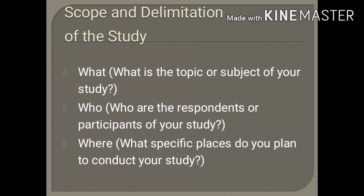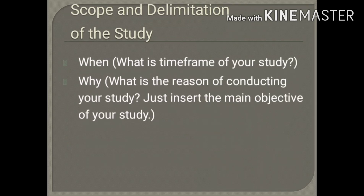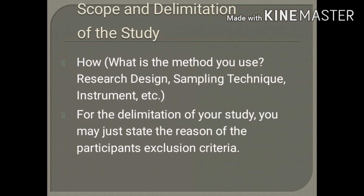For the 'when' question, they just have to indicate when they will start or end their study. For 'why', they just have to insert the main objective of their study. And for 'how', they just have to indicate the method that they are going to use — specifically the research design, sampling technique, instrument, etc.